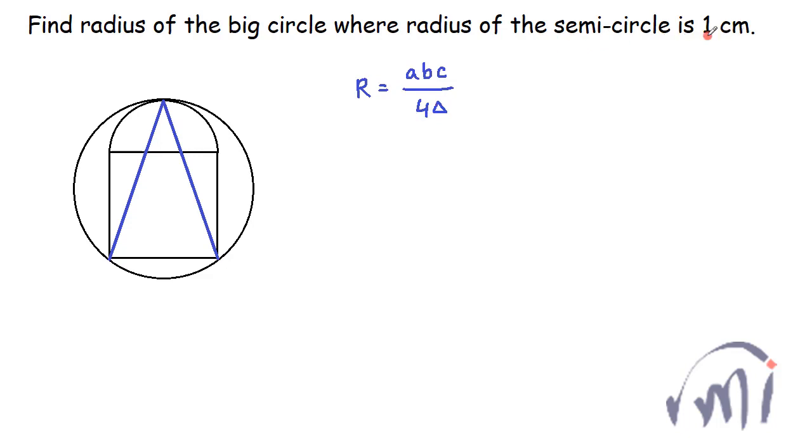Since we know the radius of the semicircle is 1 cm, that means the diameter of the circle is 2 cm. So this much is 1 cm, and since the diameter is 2 cm that means each side of the square is actually equal to 2 cm. So this is 2 cm and this is also equal to 2 cm, and distance from here till here will also be equal to 2 cm.